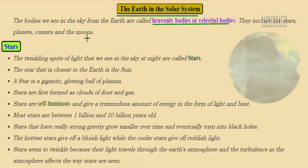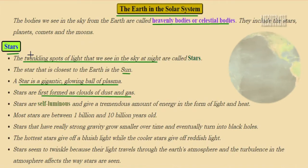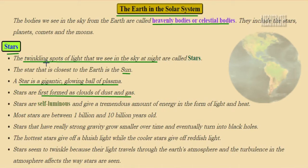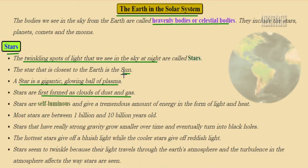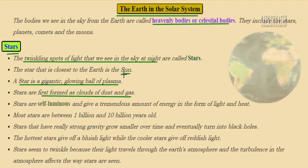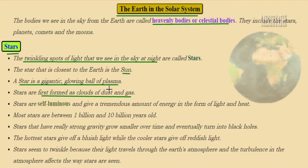Stars are nothing but the twinkling spots of light which are observed during the night time in the sky. The Sun is the closest star to the Earth. Sun is also a star — not any other object. Sun is also the biggest star and is the closest star to the Earth.